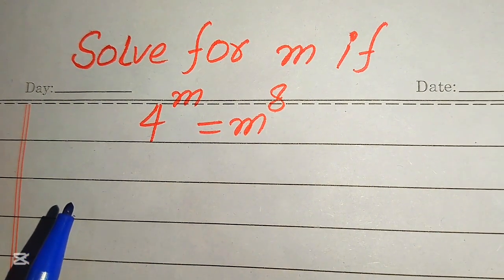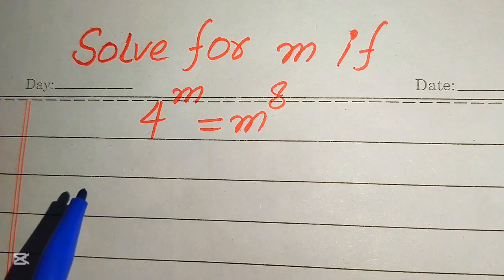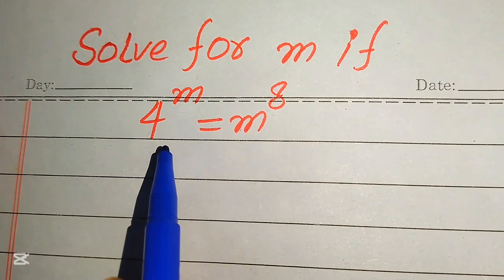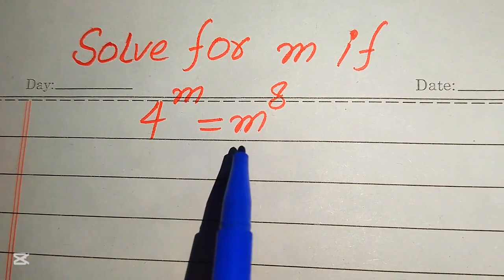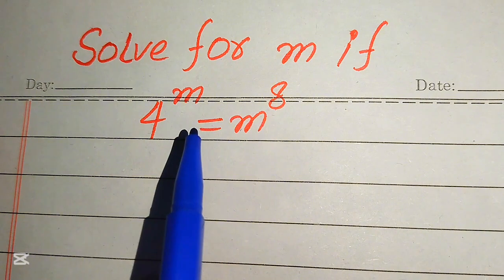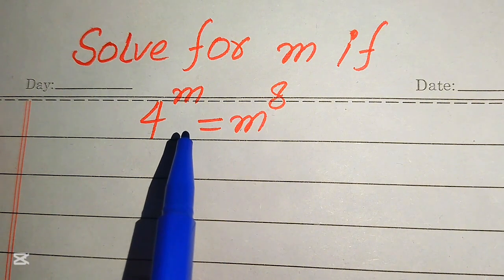The very first thing we are going to do is move all the variable terms to the right hand side and move all the constant terms to the left hand side.